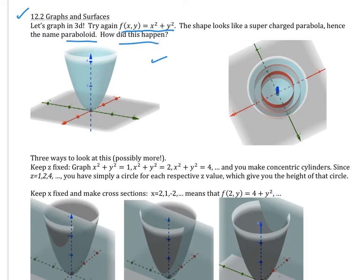How did this happen? We can graph this many different ways. You can use cross-sections by fixing one of the variables — x, y, or z — to a certain number, and then get cross-sections and see what kind of shapes are formed. The other way is to use a table of values. So if I want to look at this, let's try to keep z fixed. I'm going to graph x² + y² = 1, and that's going to be this circle right here.